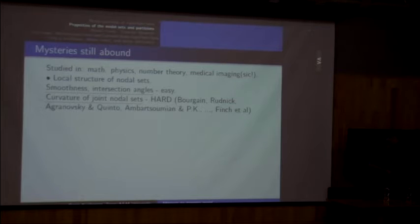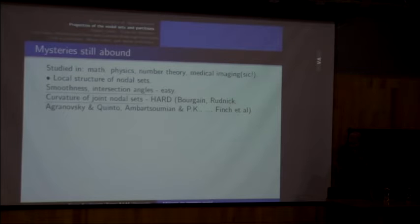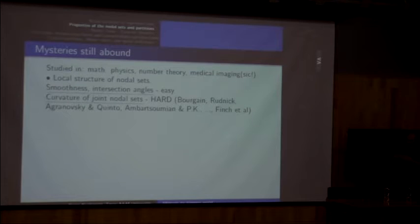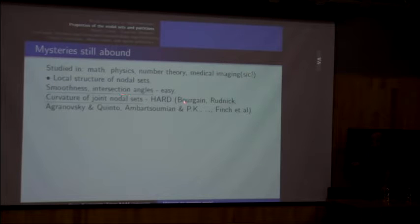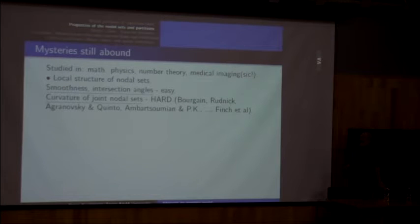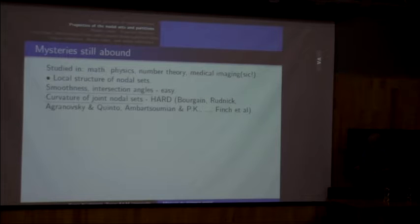Another big and not well understood story: how curved the nodal sets can be. If many eigenfunctions simultaneously vanish on the same set, it should be flat — in 2D, it should be a straight line. This appears in different areas: Bourgain and Rudnick did this for number theory reasons; we did it for medical imaging reasons. This is a really hard and not well understood thing.